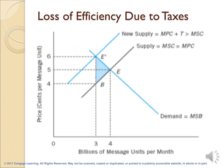In this graph, we see the loss of efficiency due to taxes. We have telephone messages as units on the horizontal axis and price in cents on the vertical axis. The efficient point is point E, where marginal social cost equals marginal social benefit, or supply equals demand. The quantity of efficient output is 4 billion units of messages and the price is 5 cents per message.